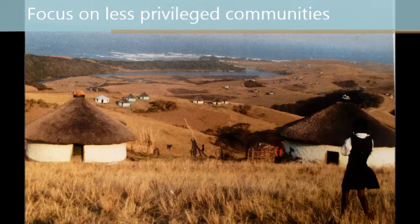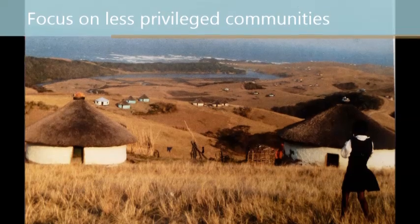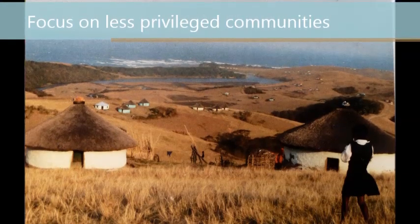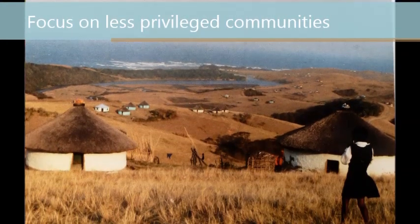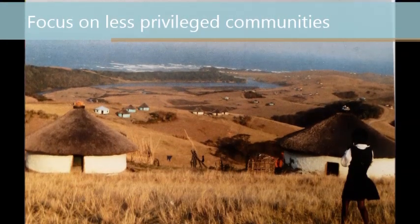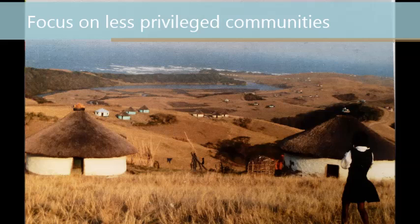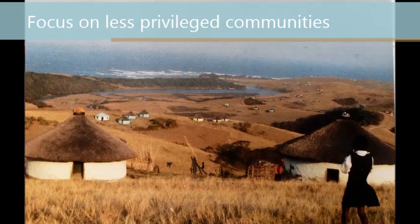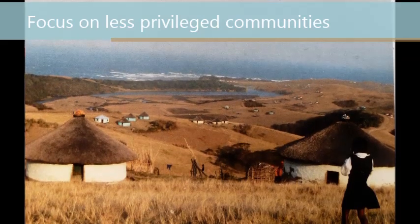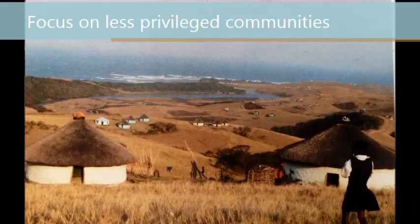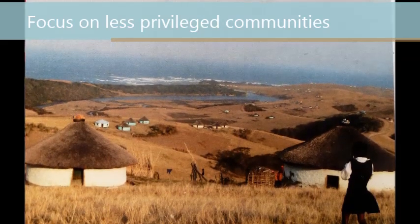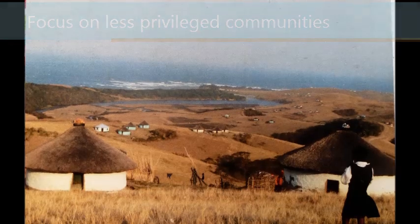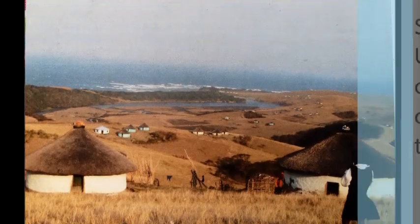What differentiates micro-utilities from other off-grid providers is their customer focus and the capacity scale at which they trade. Micro-utilities predominantly operate in less-privileged communities, typically in rural areas, and sell electricity on a small scale.